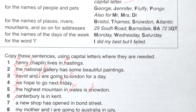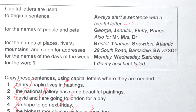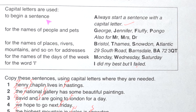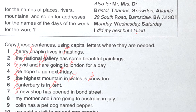'canterbury is in cant' — it should be capital 'C', and 'Kent' should also be capital. Number seven: 'a new shop has opened in bond street.' According to the first rule — to begin a sentence — 'A' follows that rule. 'Bond Street' is a place's name, so 'B' and 'S' should be capital.